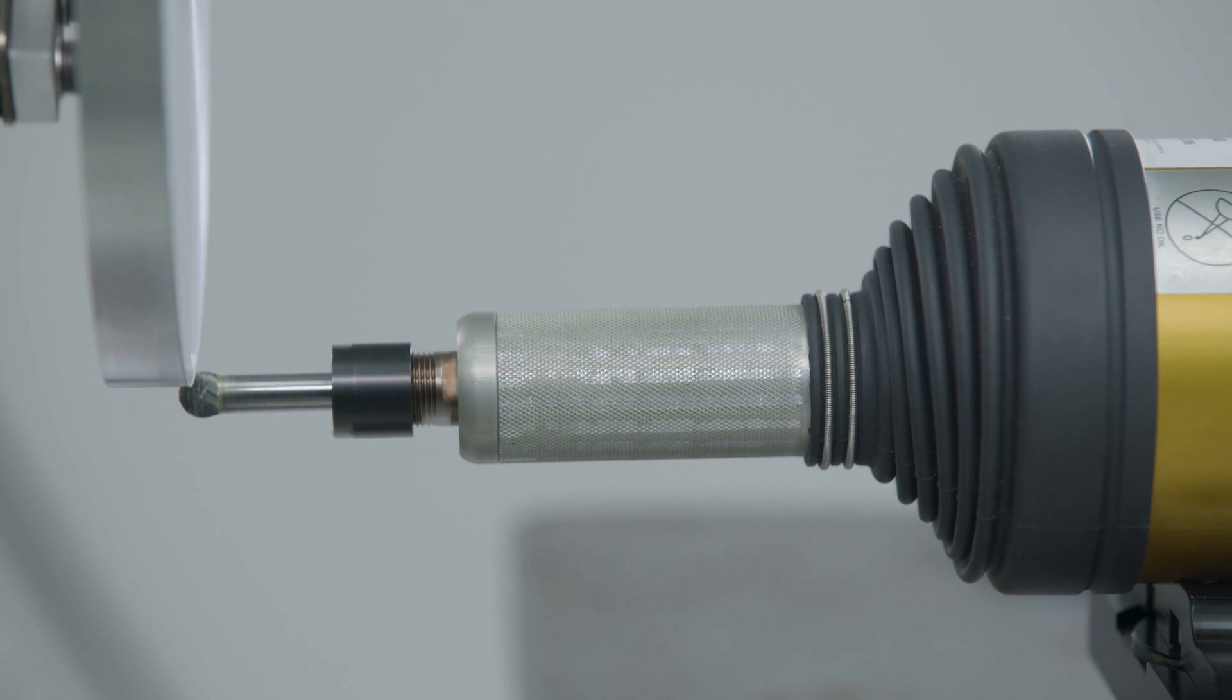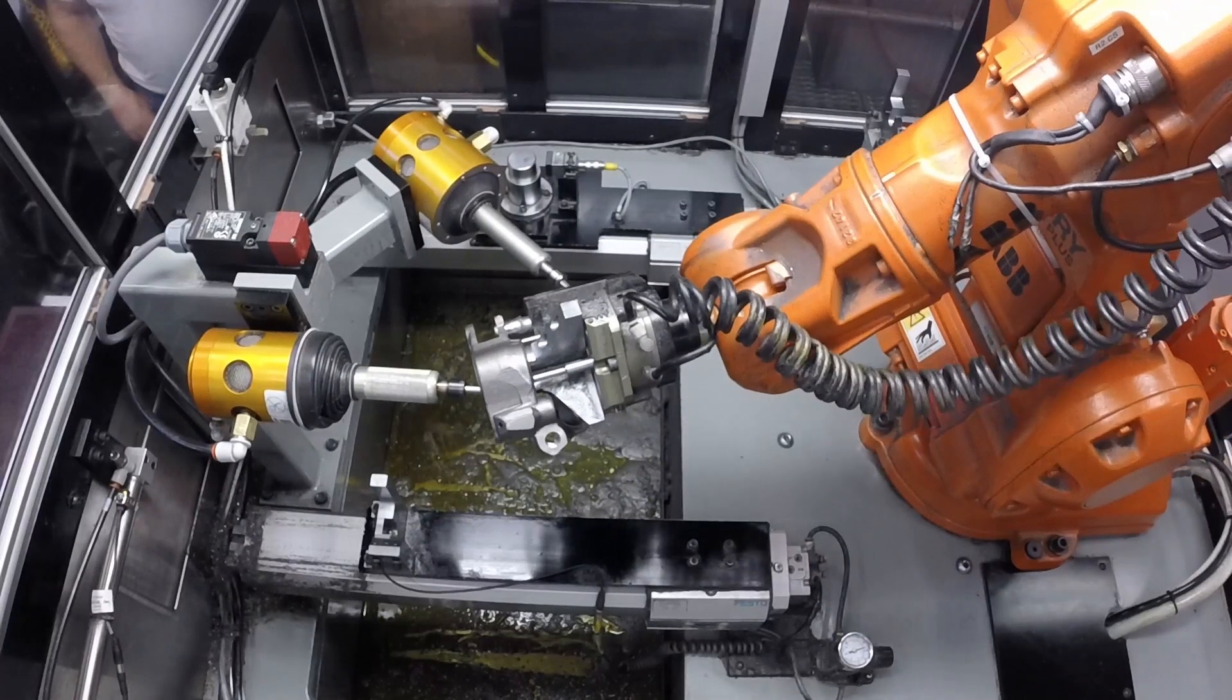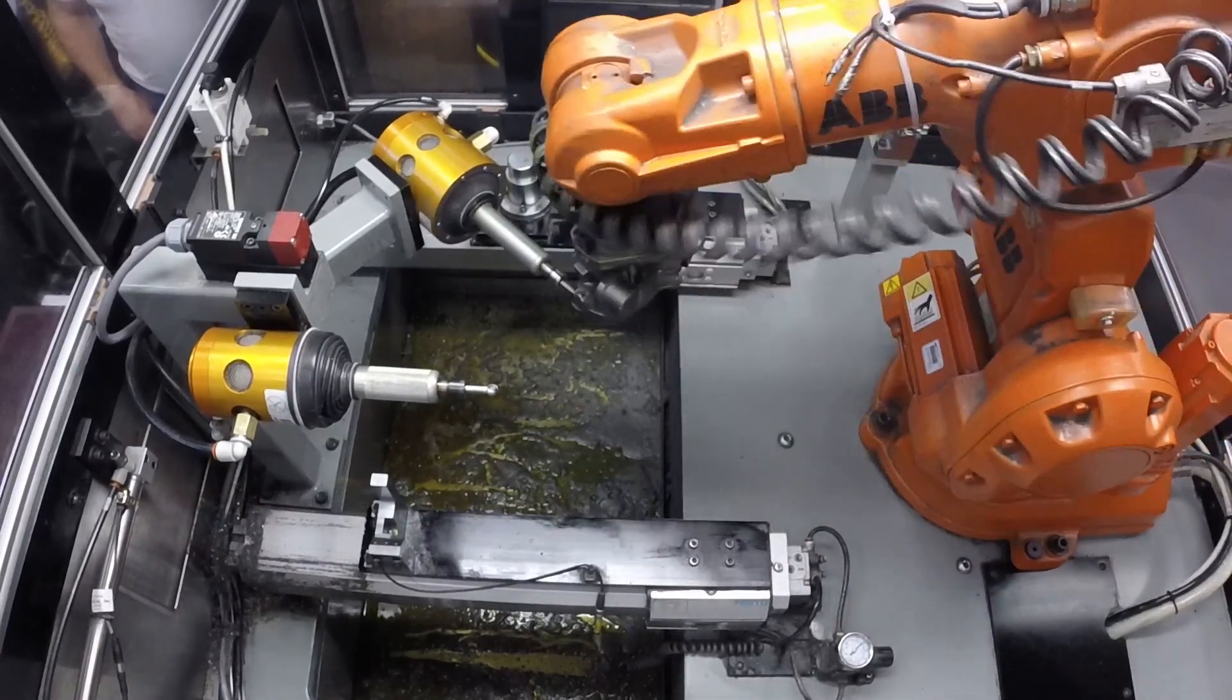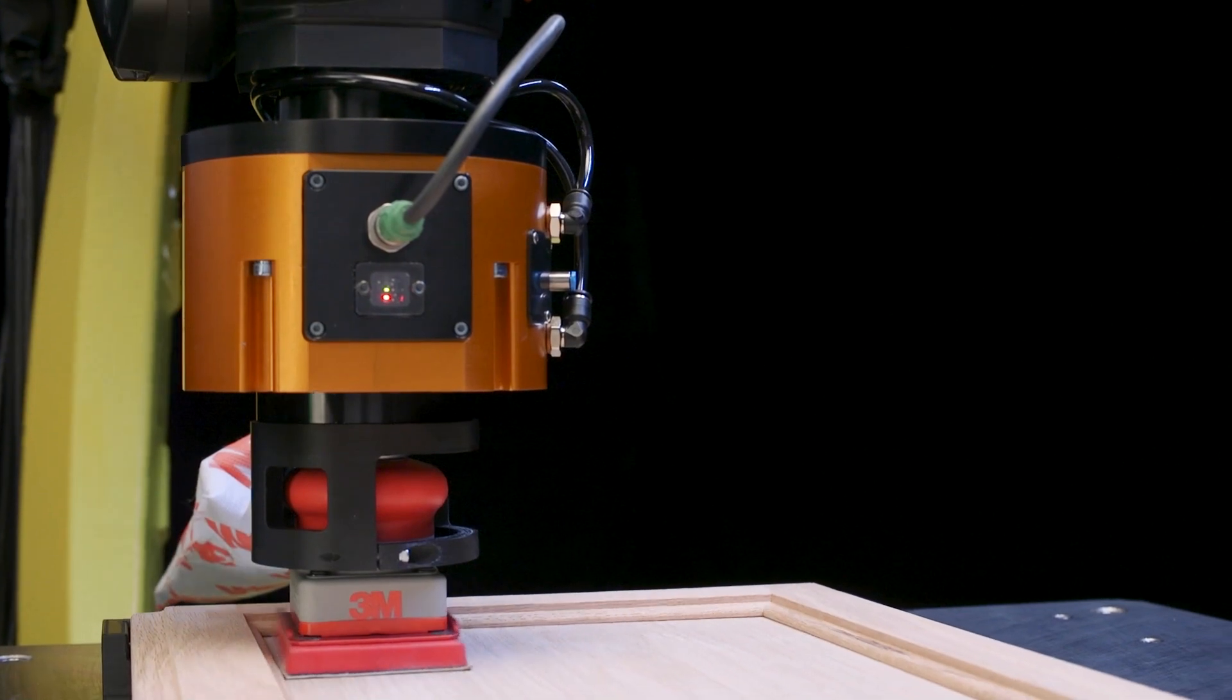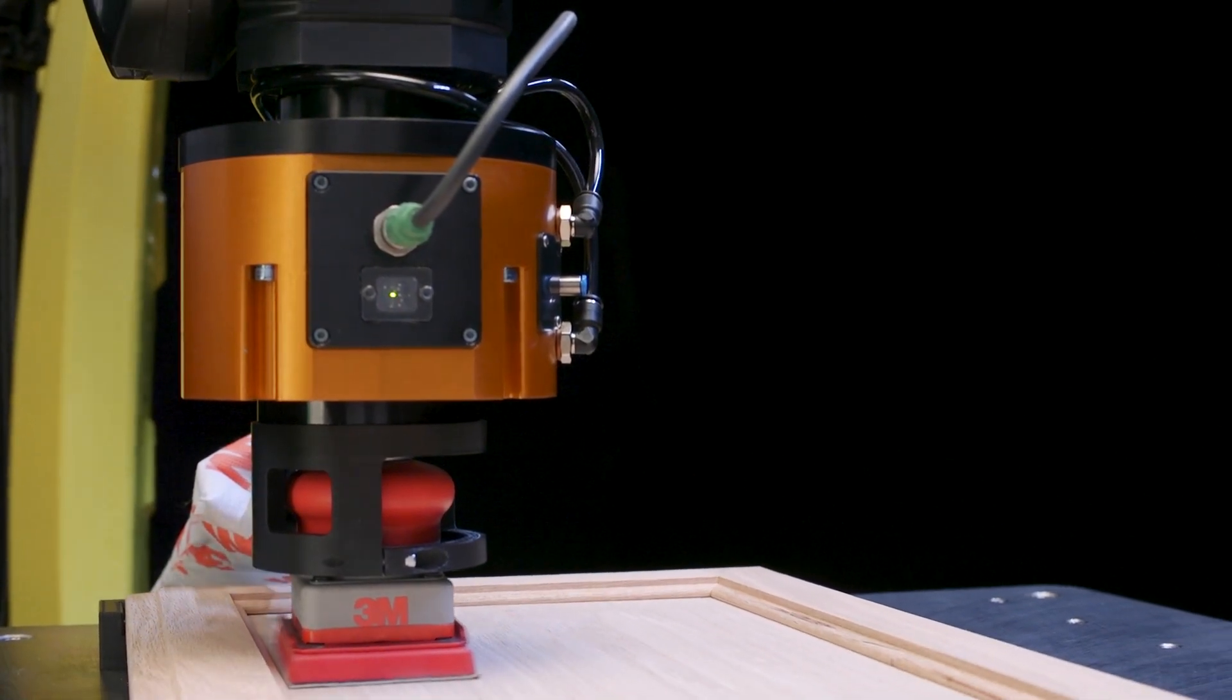There's also our radially compliant tools which offer products such as our filing tool as well as a wide range of rotary tools. And then finally we're developing a new line of products that involve adding compliance to hand tools that are already out there in the market.